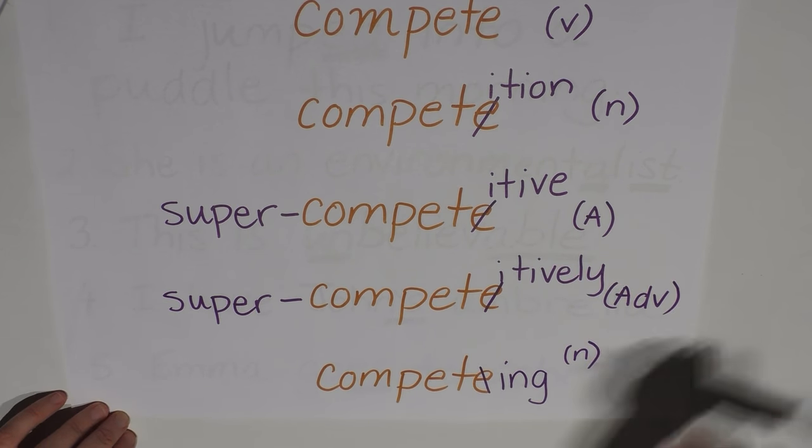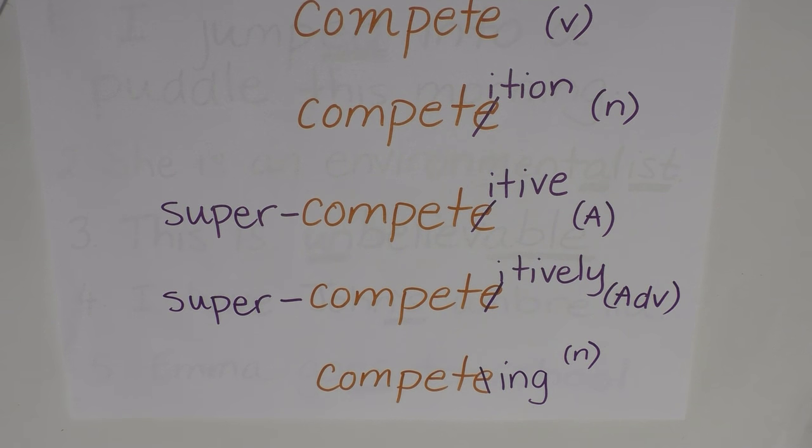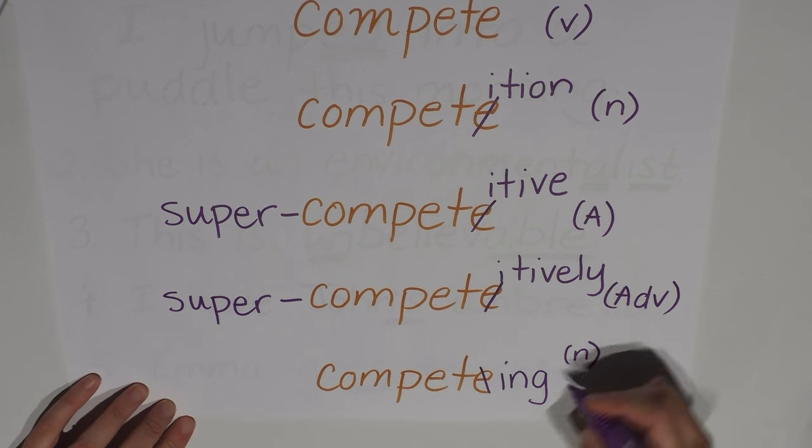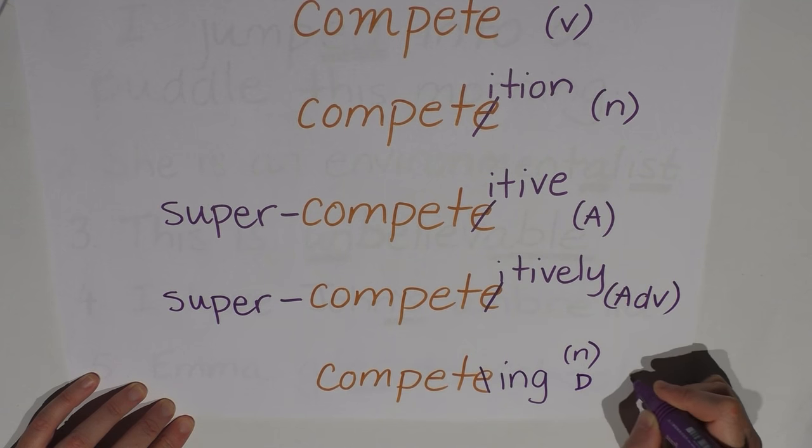And if that's the case, then we're putting on a derivational change. However, I might be adding -ing on to show the progressive form of the verb, such as she is competing tomorrow. Now, in that situation, it's not a derivational change. It's actually an inflectional change.